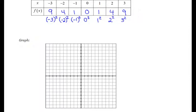Starting with negative 3, 9, then negative 2, 4, negative 1, 1, zero zero, 1, 1, 2, 4, and 3, 9. It looks like these form a parabola. Let's go ahead and draw that. So this is the graph of y equals x squared, and it's a basic parabola.